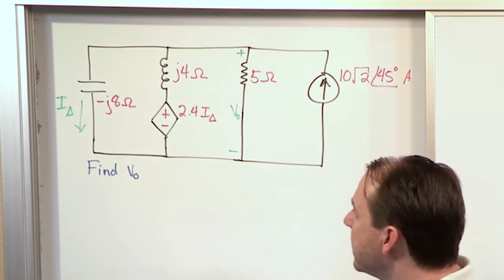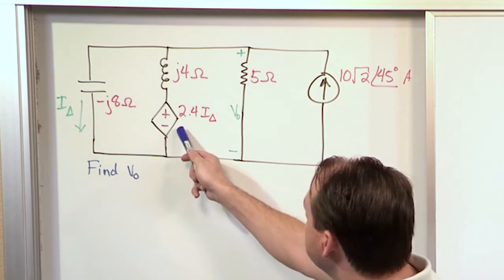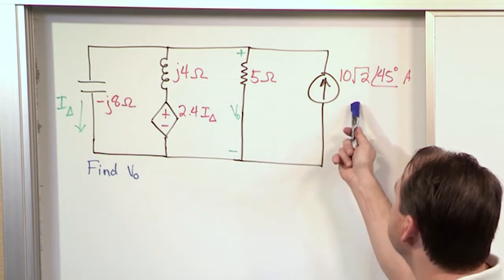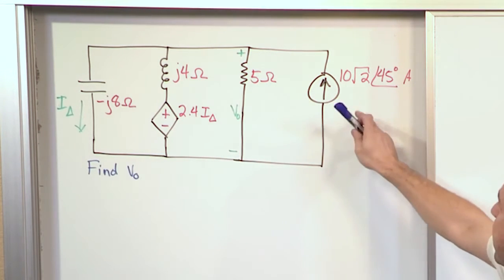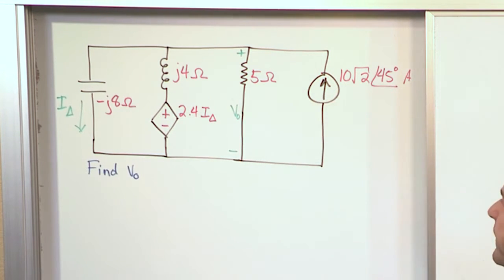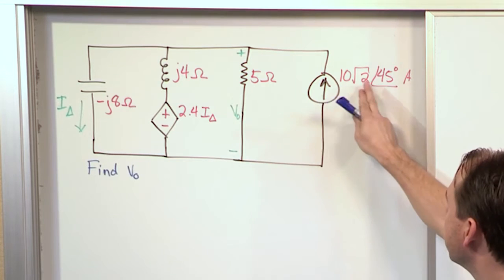So we have a capacitor, an inductor, a voltage source here, a resistor, and we have a current source here. The current source is 10 times the square root of 2 - that's the amplitude. The phase angle is 45 degrees. Don't let it scare you. That's just a number and a phase angle.